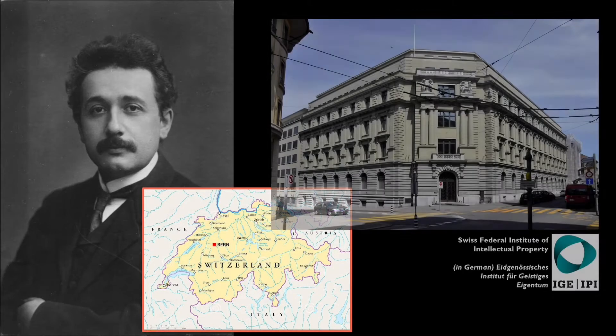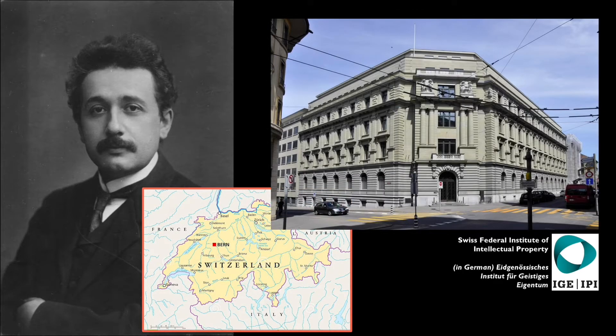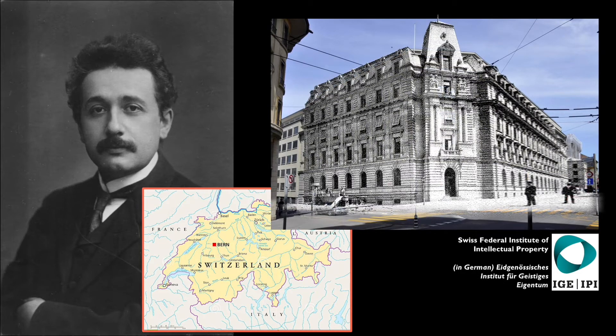It all started at the dawn of the 20th century, when Einstein was just 22 years old and recently hired as a patent office clerk in Bern. During his time there, when he wasn't even considered really a revolutionary scientist yet, but rather just a regular old guy working at a patent office.